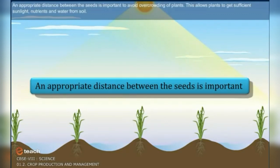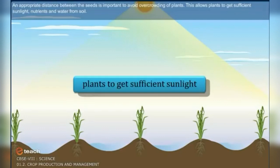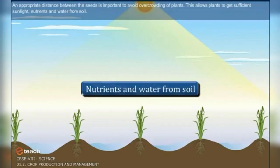An appropriate distance between seeds is important to avoid overcrowding of plants. This allows plants to get sufficient sunlight, nutrients, and water from soil.